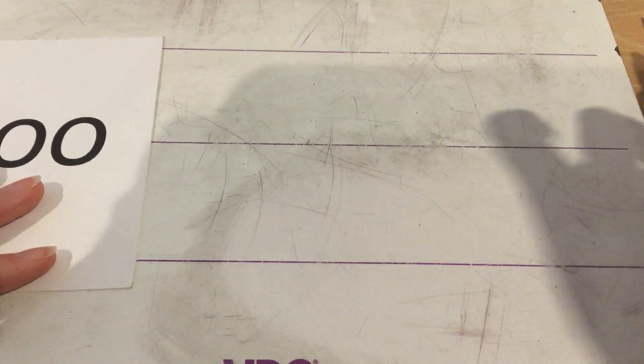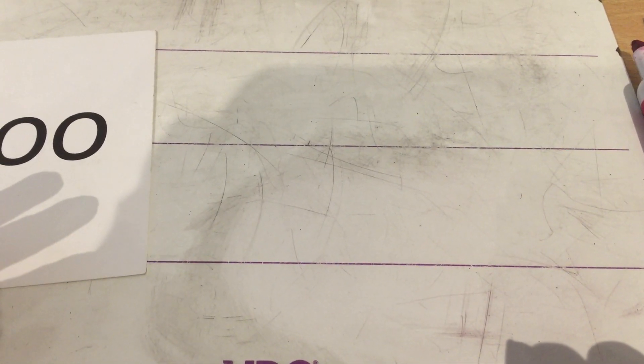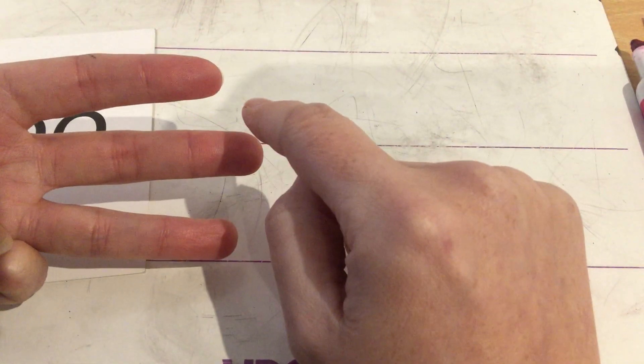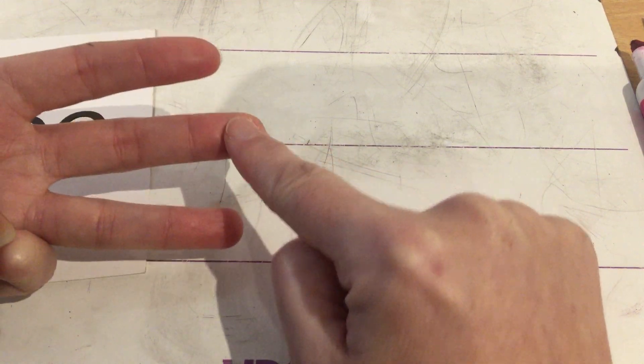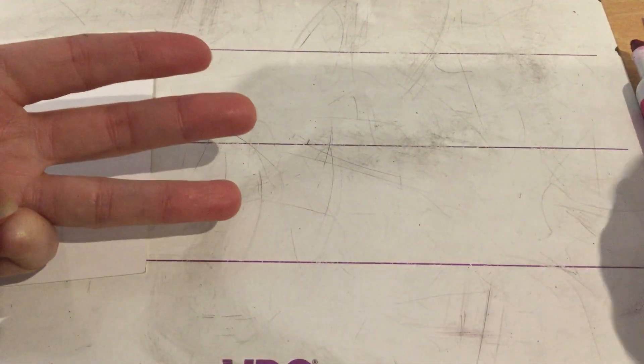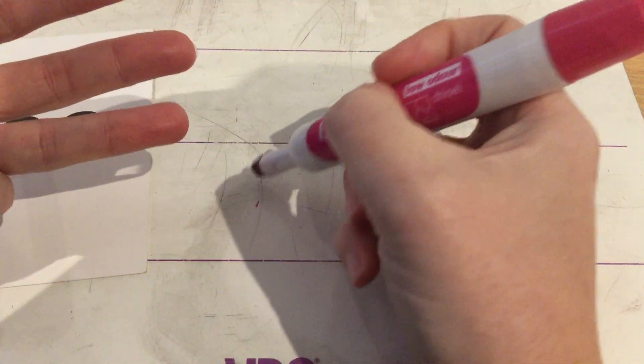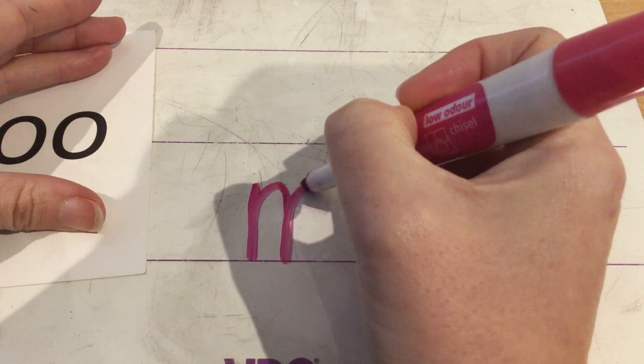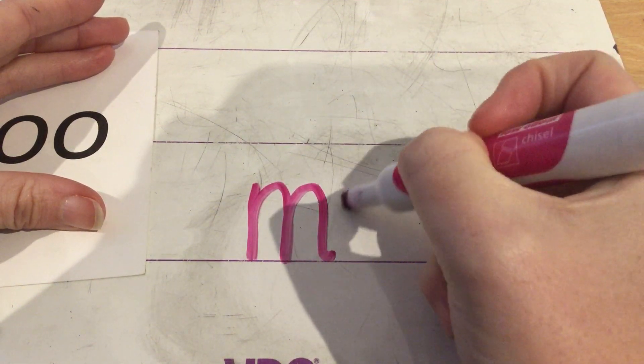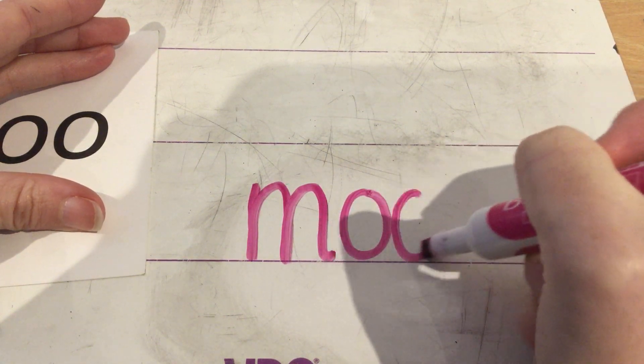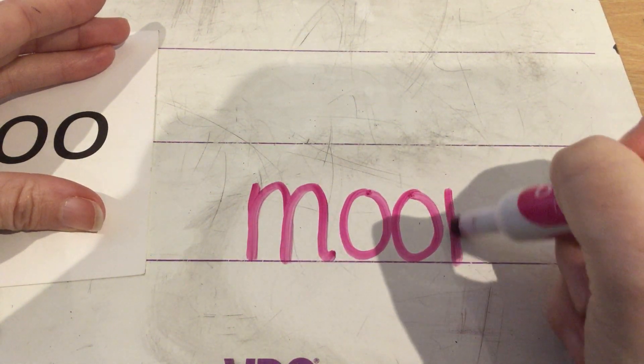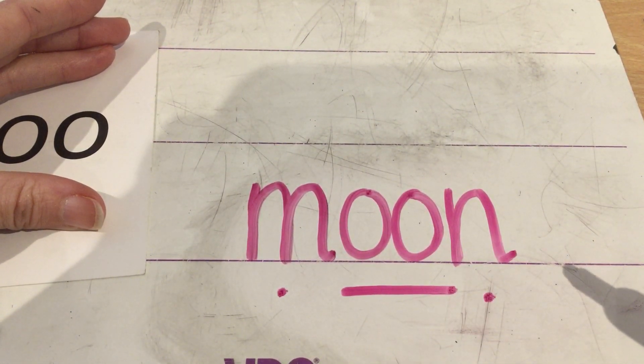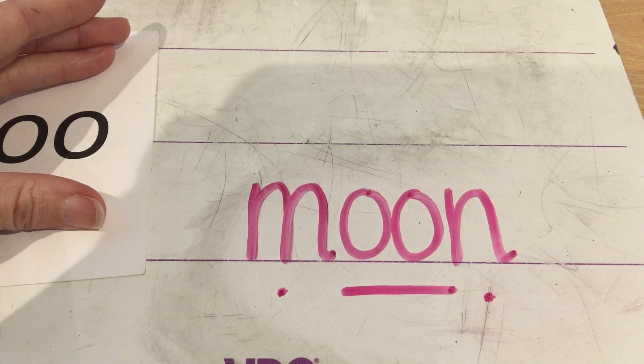Okay. This is our last one. The word is moon. Can you say moon? Now we need three Fred Fingers. Moon. M-oo-n. Moon. Let's think what that first sound was. See if you can beat me. M. M-oo-n. M-oo-n. Moon. Fantastic.